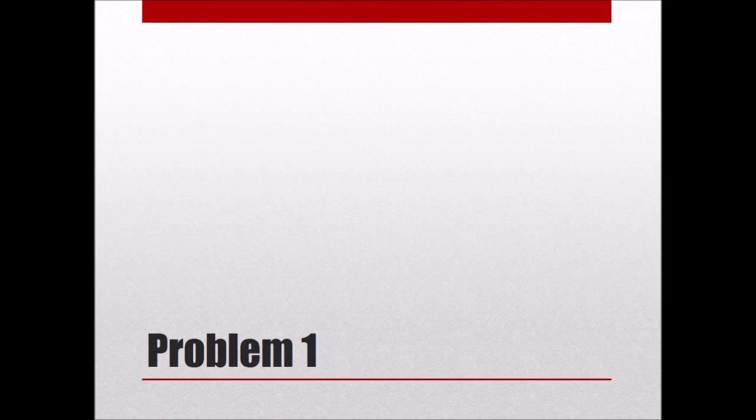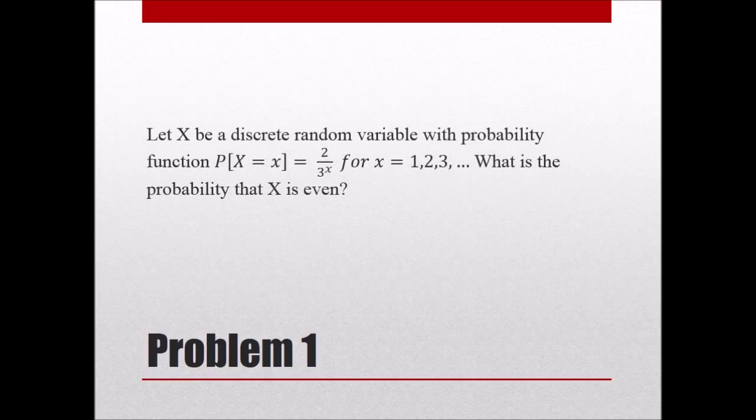Let's begin with our first problem. Let X be a discrete random variable with probability function 2 over 3 to the power of x, for x equals 1, 2, 3, 4, and so on, basically the natural numbers. What is the probability that X is even?